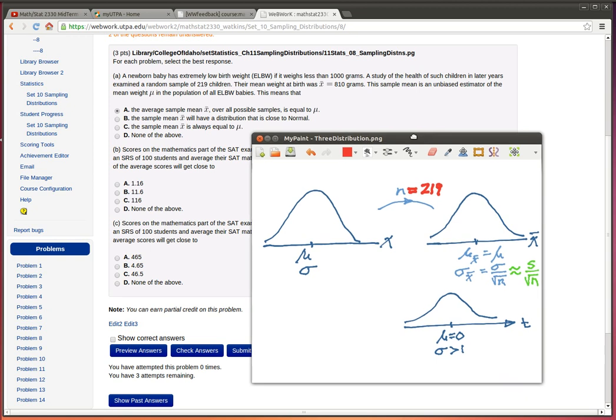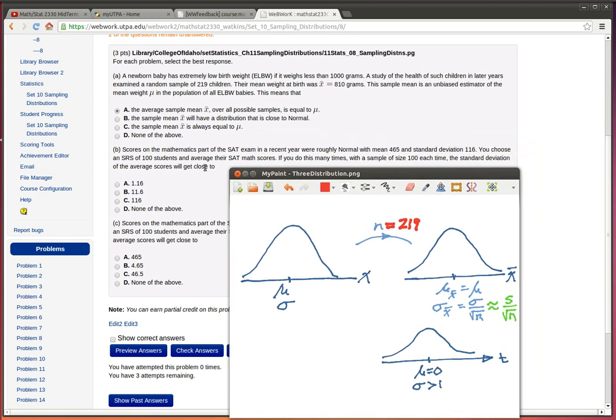All right, let's look at the second problem. Now we've got, maybe I ought to come and erase this information because we're looking at a new problem here. The scores in the mathematical part of the SAT in a recent year was roughly normal. Okay, so we're talking about this population, the population, the distribution here, and it's roughly normal.